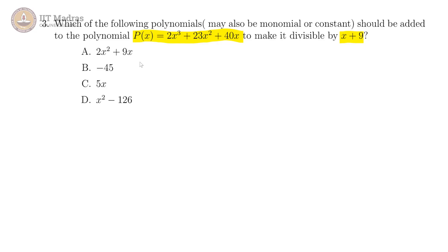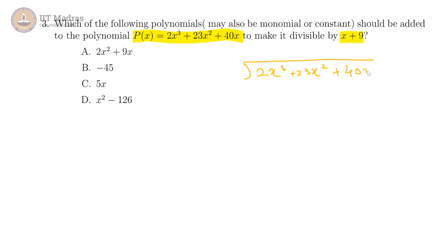So we have to check for each of these cases. What we can additionally do is look at the remainder that we get by dividing p(x) with this, and then see what to do with that remainder. If we did the division now, we have 2x³ + 23x² + 40x and we are dividing it with x plus 9.